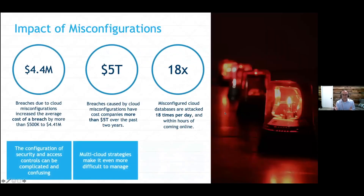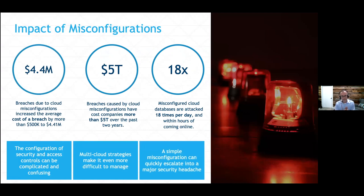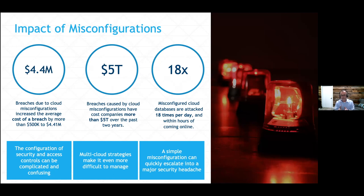Let's shift gears and talk about impact. The impact is real: $4.4 million is the average cost of a breach from cloud misconfiguration, and $5 trillion in losses over the past two years with many attacks increasing. The Verizon DBIR found that more than 40% of all error-related breaches involved misconfigurations. The Capital One breach in 2019 stemmed from an AWS S3 bucket vulnerability, and they're now facing roughly $80 to $120 million in fines alone — not counting incident response and remediation costs.